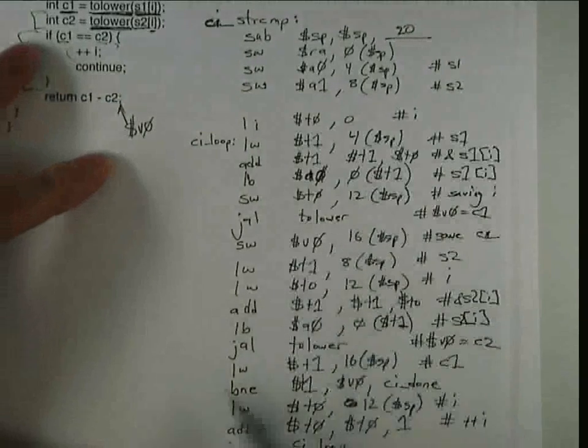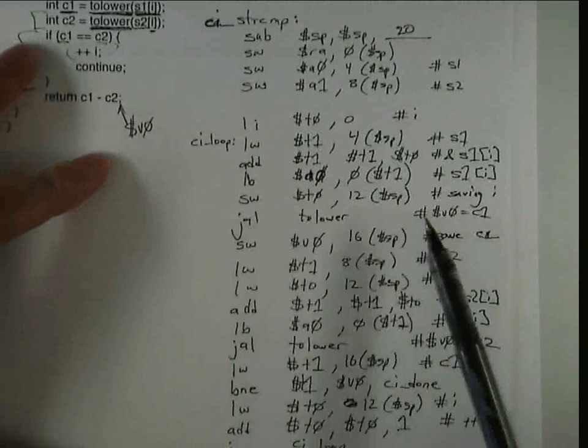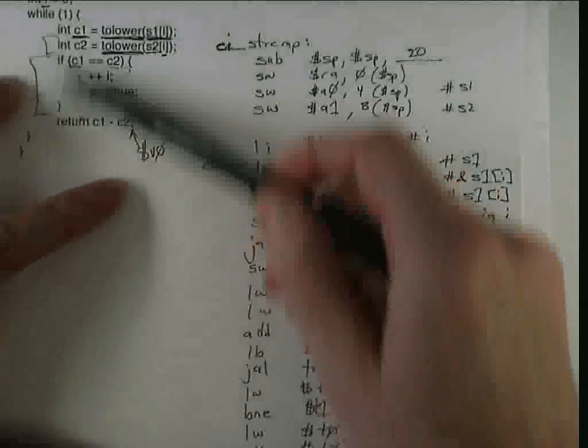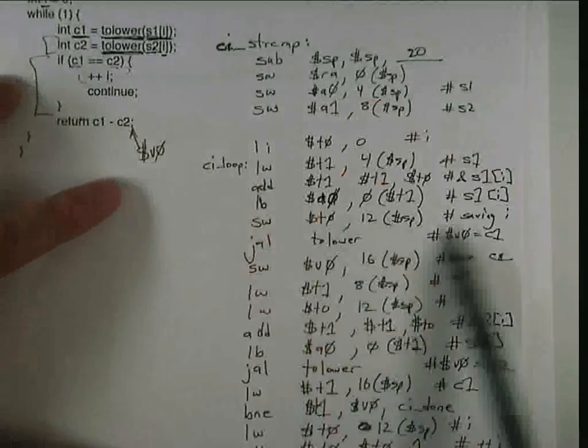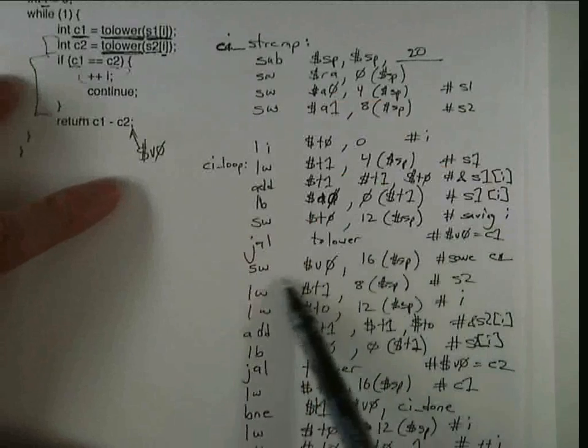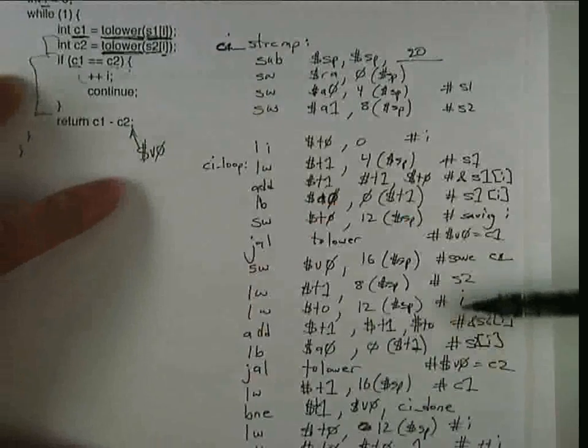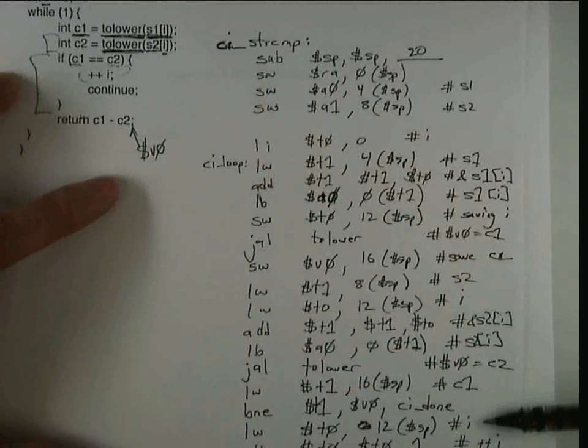In particular, because we modify i within the loop, we need to save i once, and then because it's used after each call to the function, we have two loads of i.